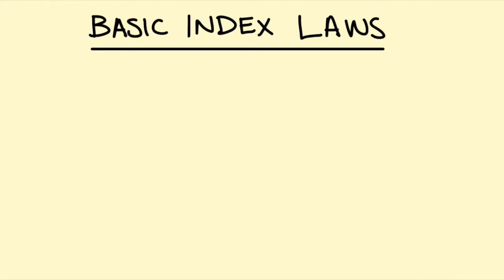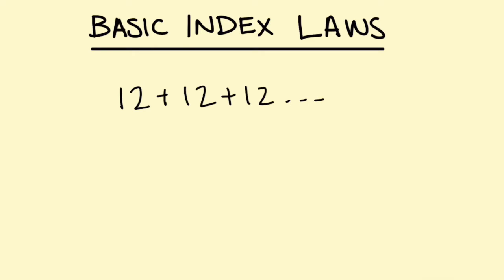Mathematics is often about doing things more efficiently — finding a faster way of doing something. For example, let's go back to basic addition. Let's say you had 12 boxes of 12 pencils. How many pencils do you have? Well, you could do 12 plus 12 plus 12, twelve times to find the answer, but you know a faster way. What's the same as repeated addition? That's multiplication, so you can do 12 times 12. That will give you the same answer.